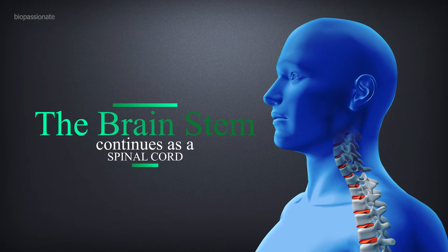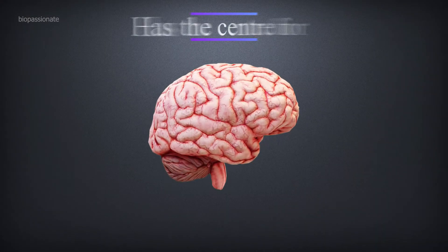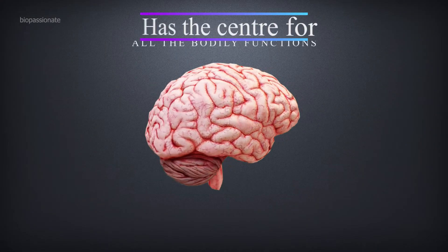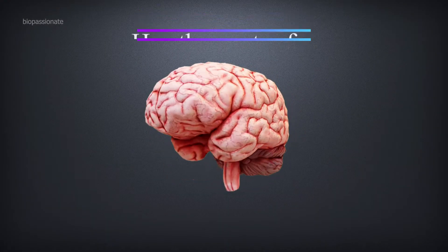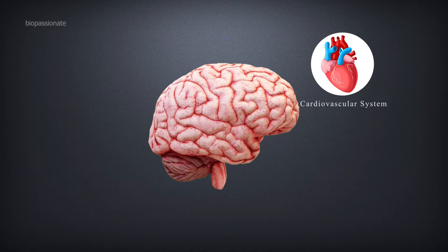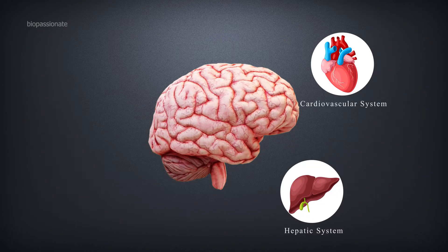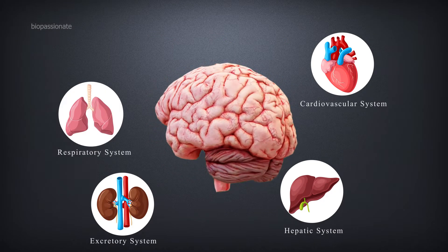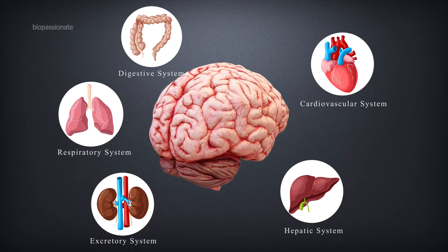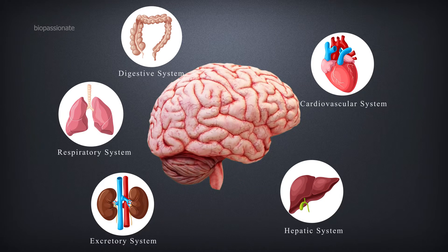The brain is the center for all bodily activities, with control over the endocrine system, respiratory system, circulatory system, and so on. The brain is the largest and most complex organ in the human body, and weighs about 1.2 to 1.4 kg.